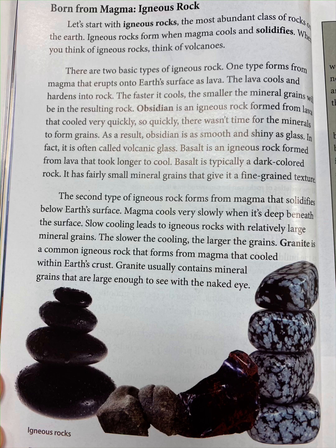Igneous rocks form when magma cools and solidifies. When you think of igneous rocks, think of volcanoes. One type forms from magma that erupts onto earth's surface as lava. The lava cools and hardens into rock. The faster it cools, the smaller the mineral grains will be. Obsidian is an igneous rock formed from lava that cooled very quickly — so quickly there wasn't time for the minerals to form grains. As a result, obsidian is as smooth and shiny as glass, often called volcanic glass.